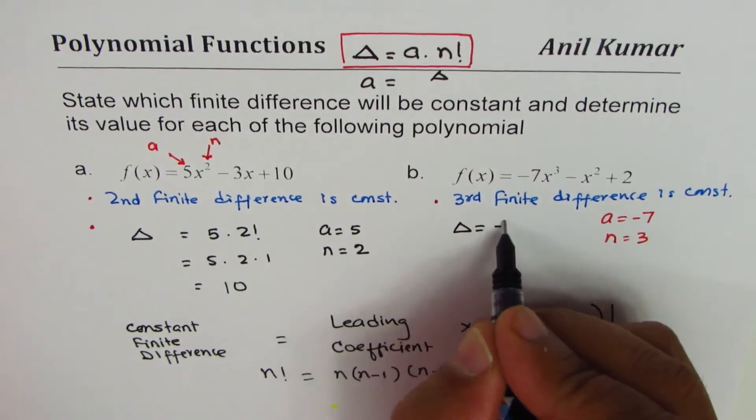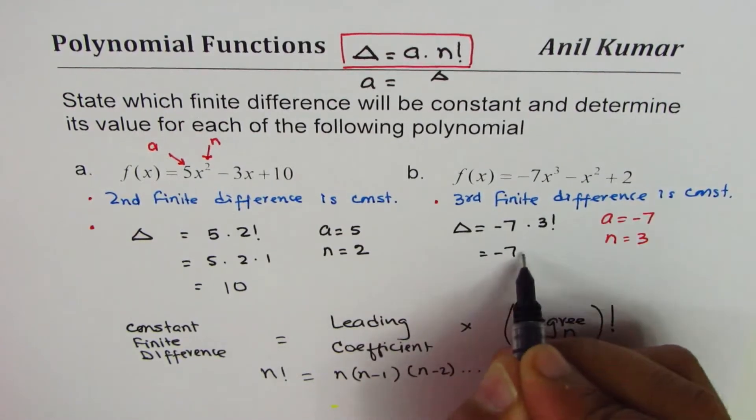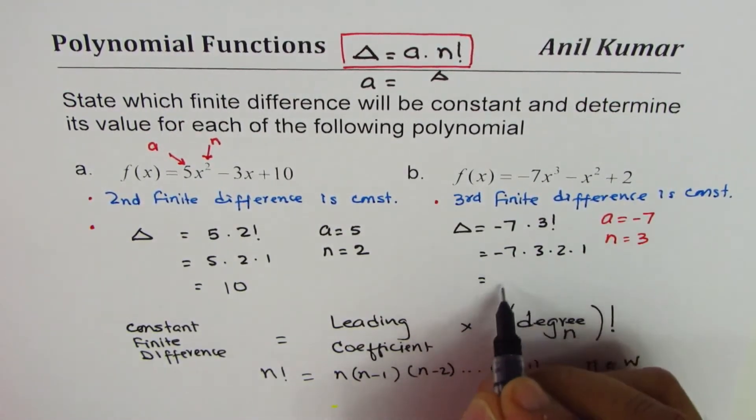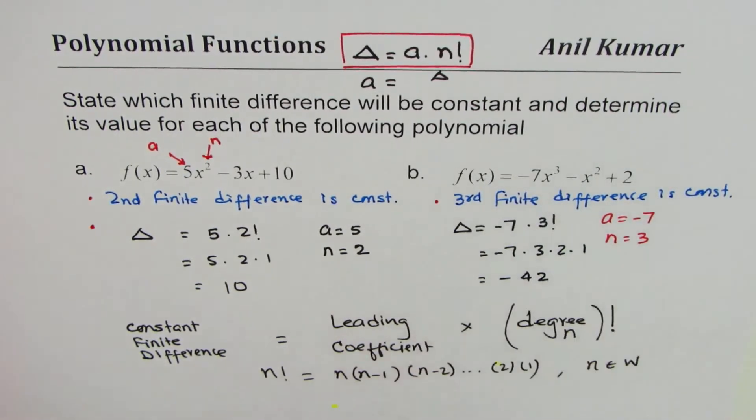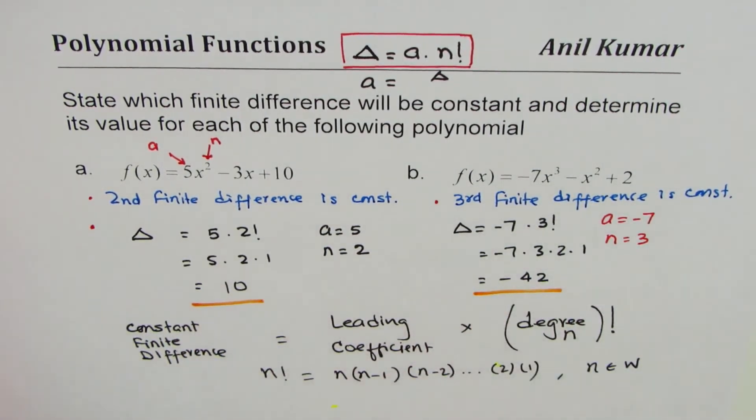Leading coefficient of minus 7 times 3 factorial. 3 factorial, which is minus 7 times 3 times 2 times 1. 6 times 7 is 42, so minus 42 is the answer. So you get your solution: 10 for the first one and minus 42 for the second one.